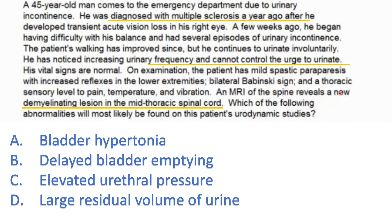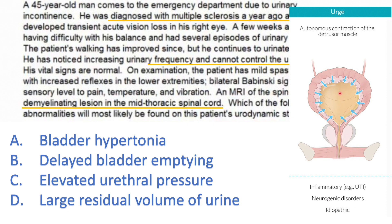On examination: mild spastic paraparesis, increased reflexes, bilateral Babinski sign, and a thoracic sensory level — all classic upper motor neuron signs. The detrusor muscle, like any other muscle, is under inhibitory CNS control by upper motor neurons. Loss of this inhibition due to the demyelinating lesion leads to detrusor hyperreflexia: before the bladder fully distends, the muscle prematurely contracts. This is detrusor overactivity — urge incontinence.